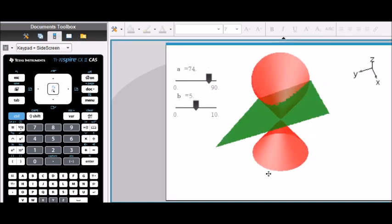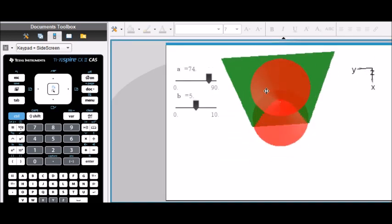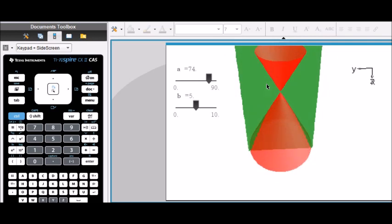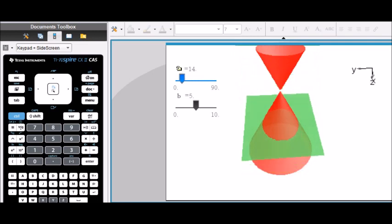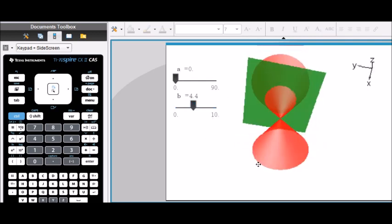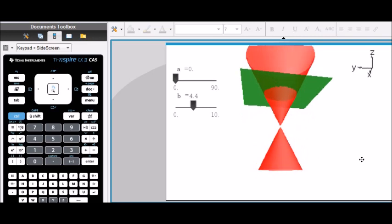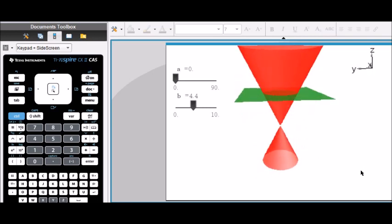We can have recreating conic sections here. That means we can slice through a cone and see what type of shapes I can get. Okay. So you can look at any angle. And if this green plane is perfectly leveled, then the intersection is, of course, a circle.